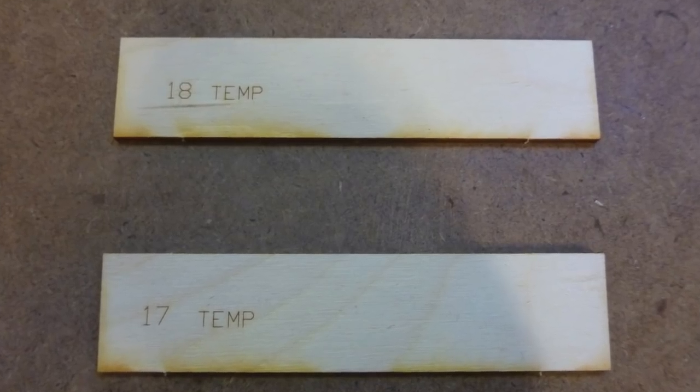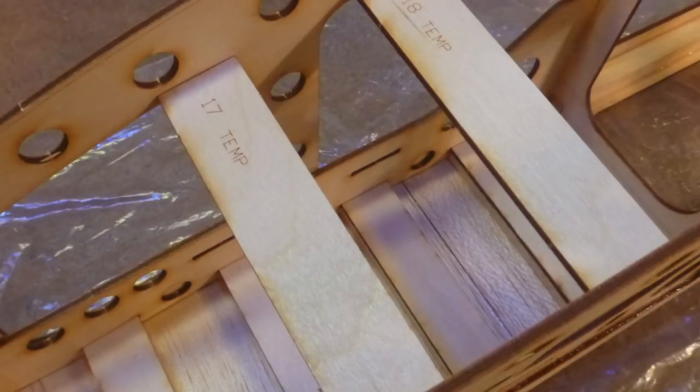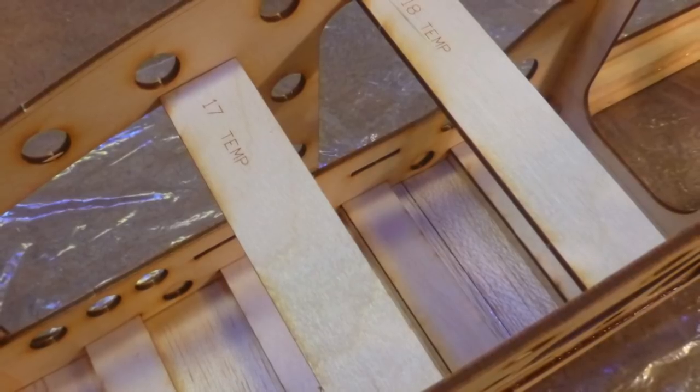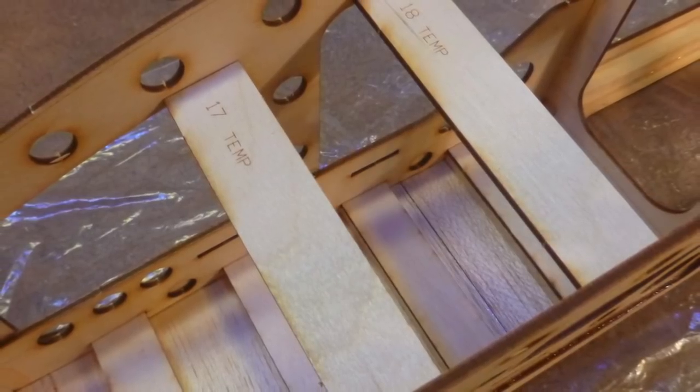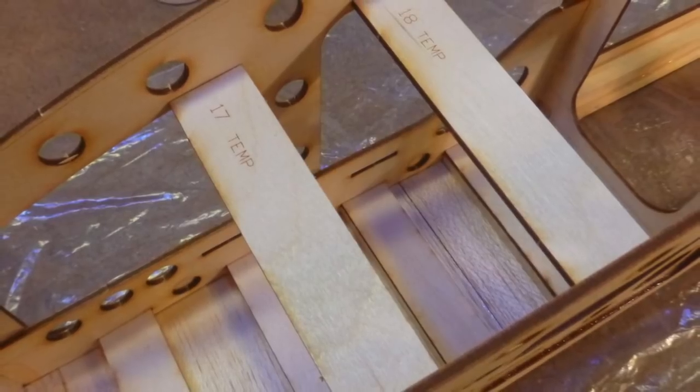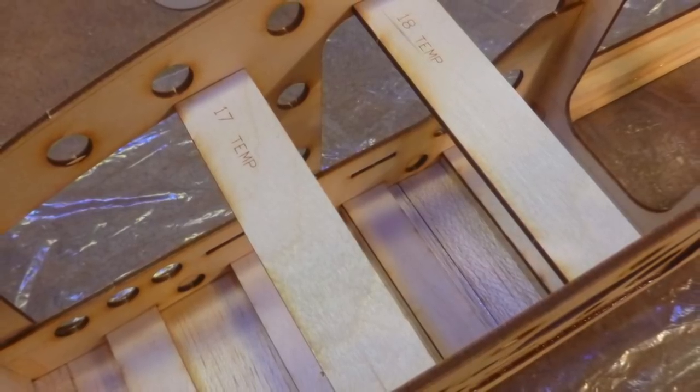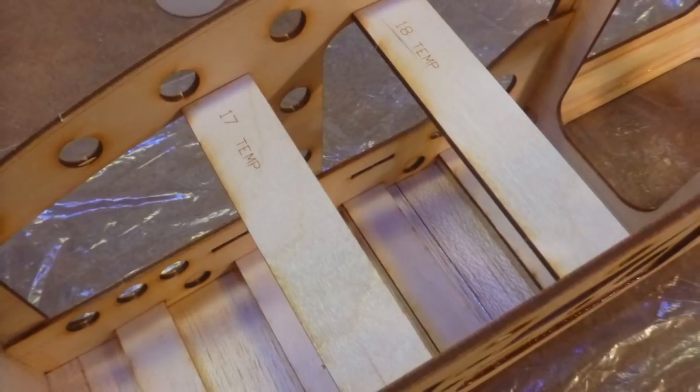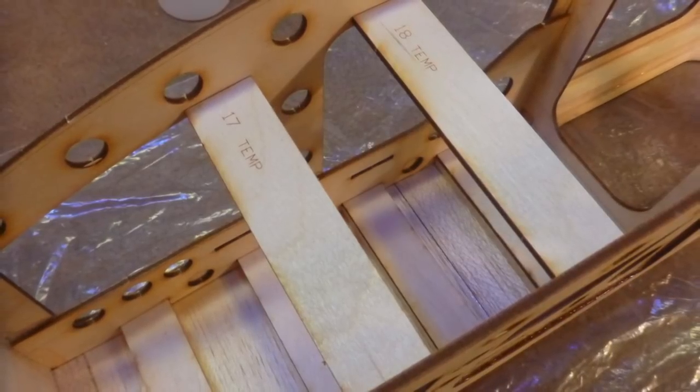Locate parts number 17 temporary and number 18 temporary and place them near the top of fuselage directly above the corresponding parts 17 and 18 of the battery tray about 1 inch down. Do not glue them.